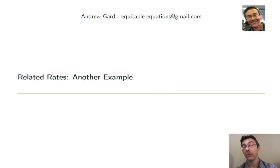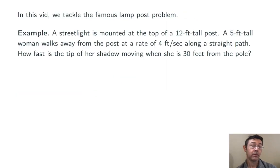Hey everybody. Today we're doing another related rates problem. We're going to tackle the famous lamppost problem. A streetlight is mounted at the top of a 12-foot tall post. A 5-foot tall woman walks away from the post at a rate of 4 feet per second along a straight path. How fast is the tip of her shadow moving when she's 30 feet from the pole?